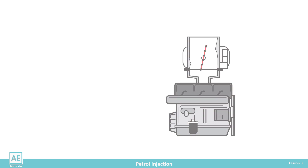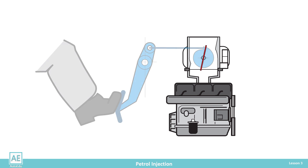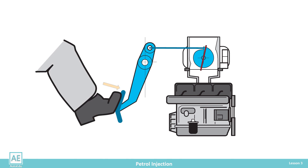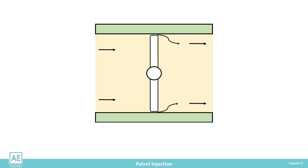The throttle valve is used to regulate the engine speed. The driver uses the gas pedal to move the throttle. By rotating the butterfly, the air flow in the intake pipe is regulated. By changing the amount of the mixture, the speed of the engine changes. The ECU needs to monitor the position of the throttle valve, which is essential for calculating the amount of fuel injected.